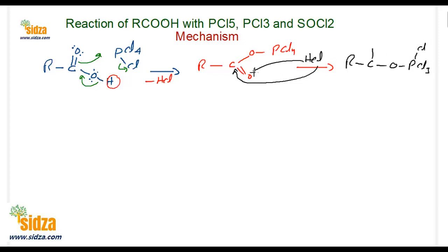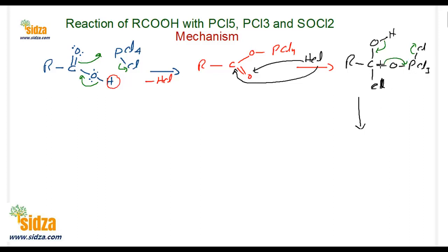After HCl addition to the carbonyl group, you get an OH and a Cl attached to the carbon, with the PCl₃ fragment still attached via oxygen. Now one of the chlorines comes off from the phosphorus, the hydrogen is lost as H⁺ forming a double bond, the electron pair shifts with oxygen to form a double bond with phosphorus, the C–O bond breaks, and Cl⁻ comes off.